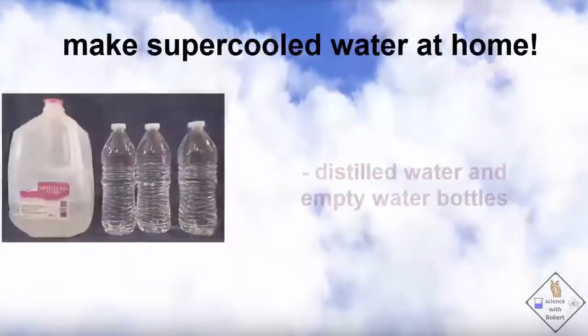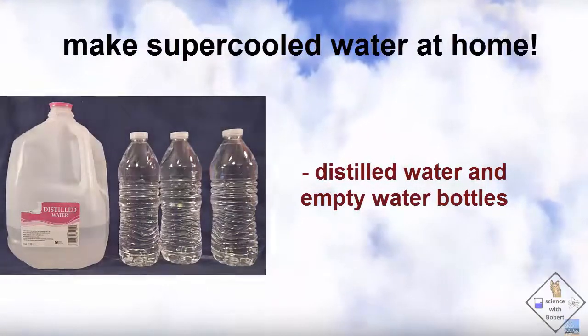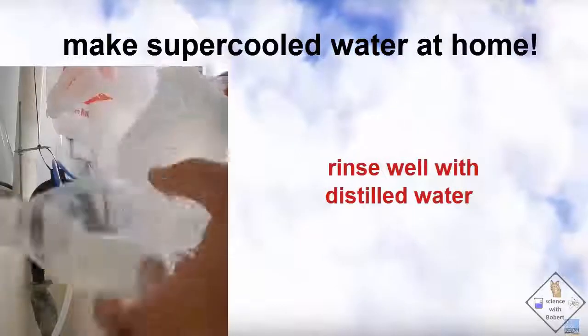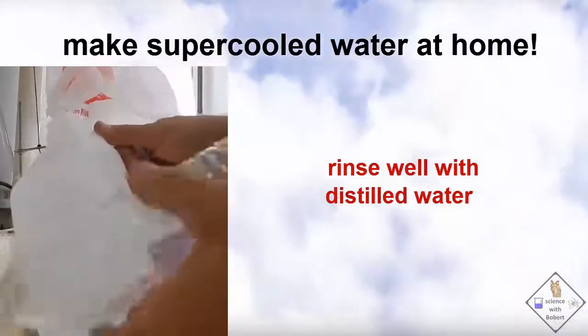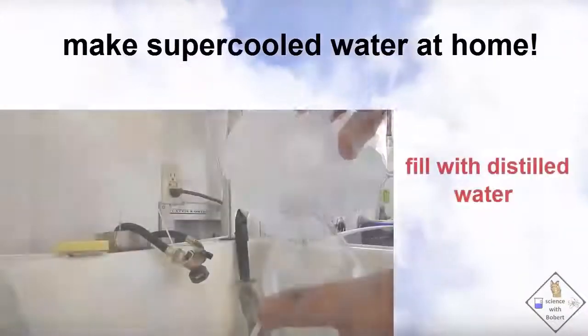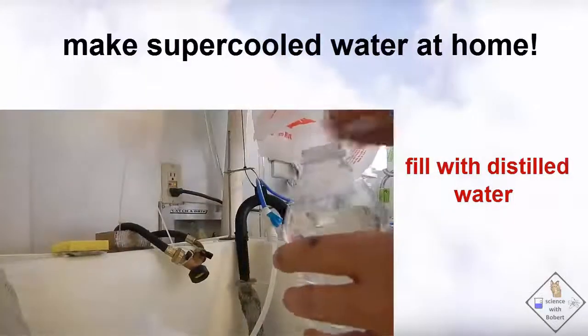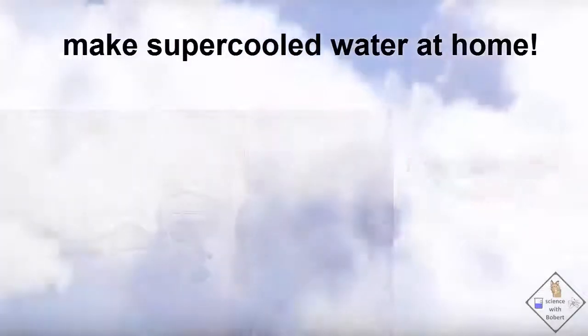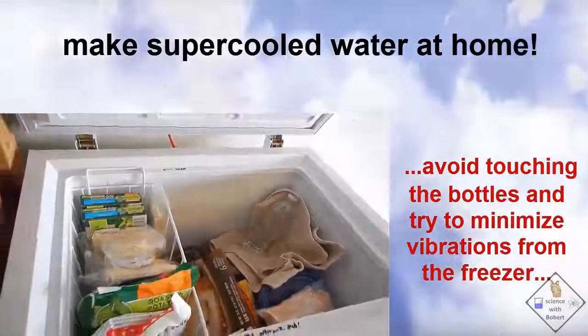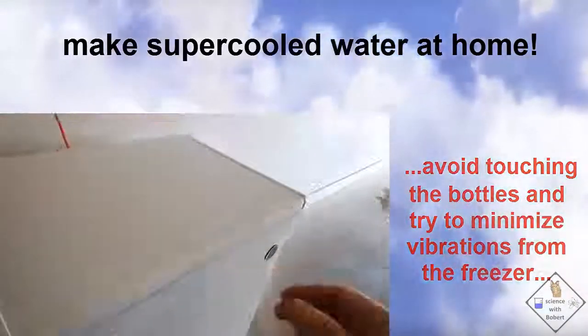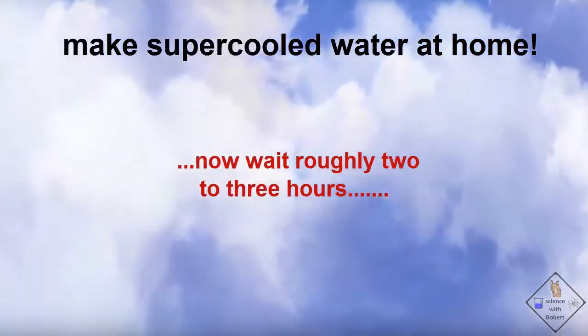You can make your own super-cooled water at home. All you need is some distilled water and find some empty water bottles. Be sure to rinse the water bottles well with distilled water several times. That way you can remove any hygroscopic nuclei. And then fill it up with distilled water and be sure to cap it. Try to avoid touching the bottles and minimize vibrations from the freezer with maybe a towel. Depends on your freezer, about two to three hours should be good.